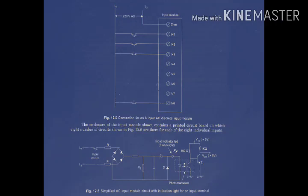The processor will work according to that. When the input is given to the processor, according to the program, the processor will check: input is available, now what to do? So according to the program, it will switch on motor A, then motor A contact gives the output. That is the input module's work.